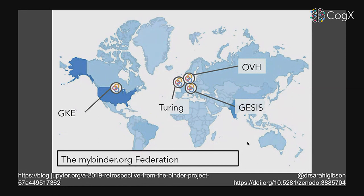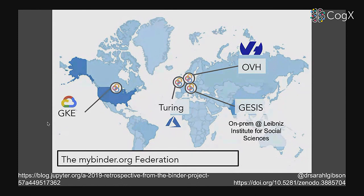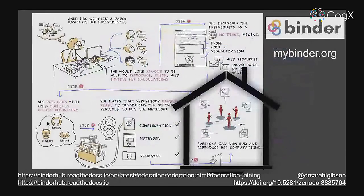The federation also allows us to be robust against cluster outages or funding changes. If we lose a cluster through computational issues or funding, we can spread traffic out amongst the remaining clusters. BinderHub is developed in an open source, modular fashion, and we're in a cool situation where the federation is supported by four different flavors of Kubernetes hosting one website. We're not even entirely cloud-based — the GESIS cluster, the second largest in the federation, is an on-premise facility hosted at the Leibniz Institute. Because it's open source software, it doesn't require cloud vendor lock-in.